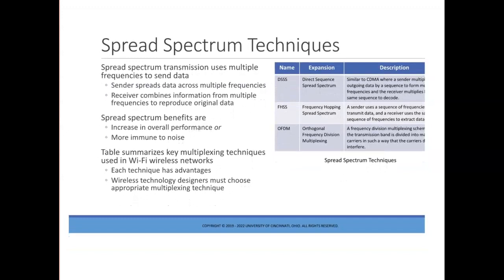Spread spectrum transmission uses multiple frequencies to send data. The sender spreads data across multiple frequencies, and the receiver combines the information from multiple frequencies to reproduce the original data. Spread spectrum can be used to either increase overall performance or make transmission more immune to noise. The table summarizes three key multiplexing techniques used in wireless networks. Each technique has advantages, and when a wireless technology is defined, designers choose an appropriate multiplexing technique.